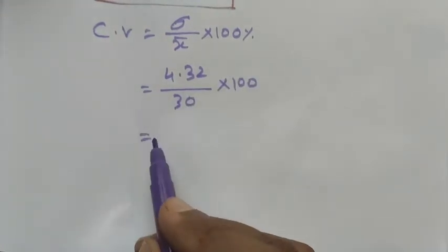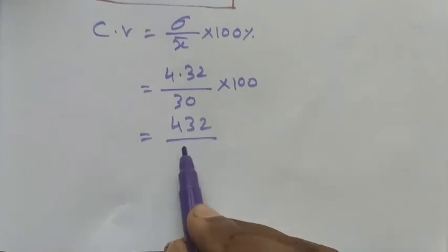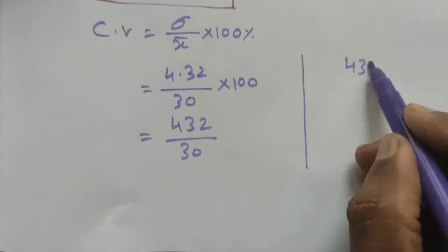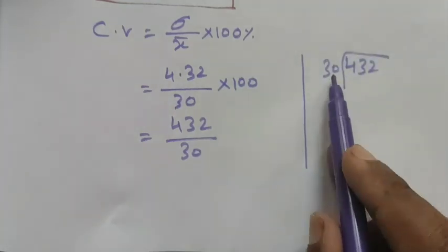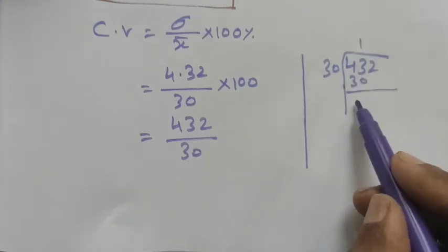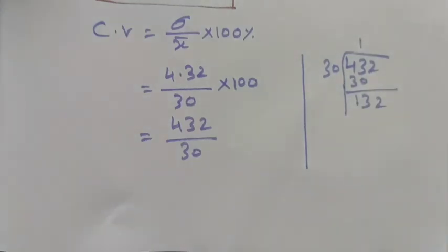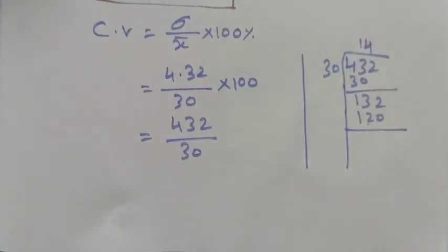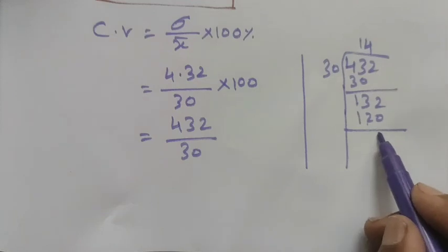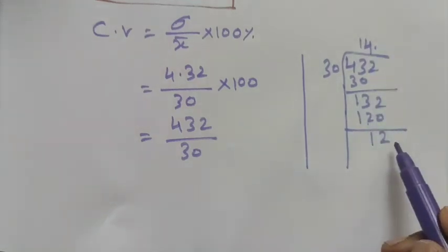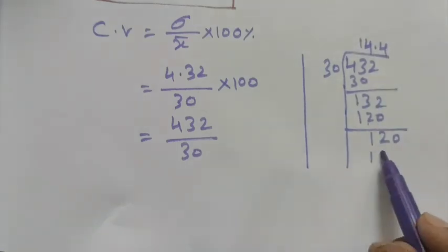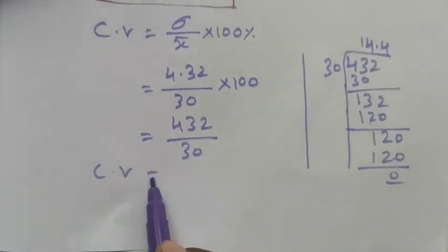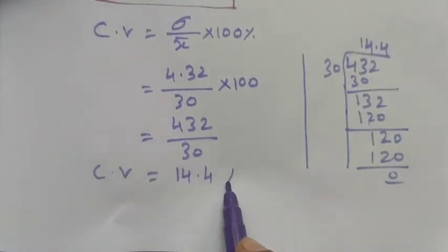Multiplying gives 432 divided by 30. Performing the division: 30 goes into 432 giving 14, remainder 12. Bringing down a zero gives 120, and 30 goes into 120 exactly 4 times, giving 14.4.